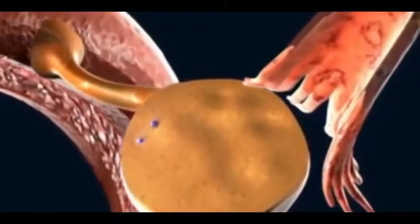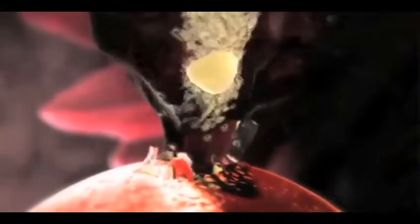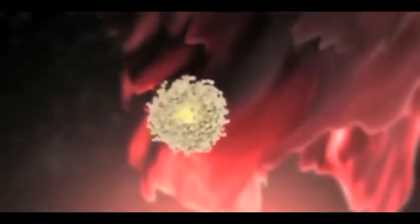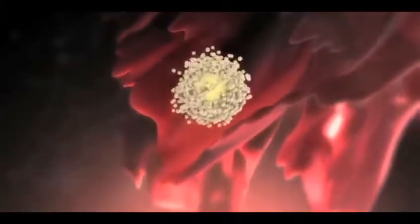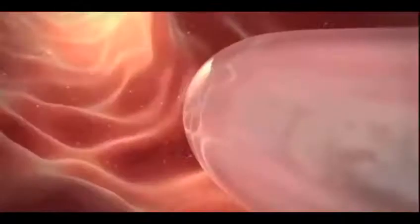After ovulation, the egg enters the fallopian tube. A woman is likely to get pregnant if she has sex just before, during, or right after ovulation. During this time, a sperm cell from man's semen is able to fertilize the egg while it is inside the fallopian tube.